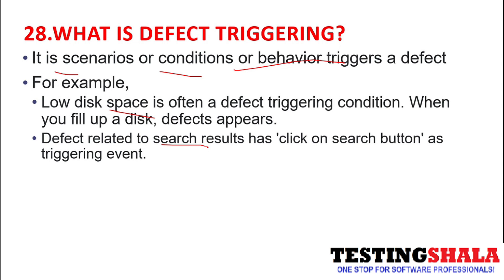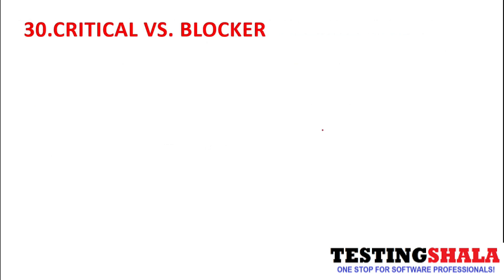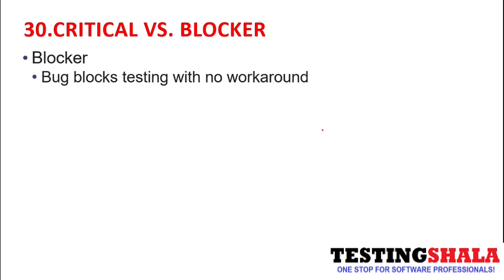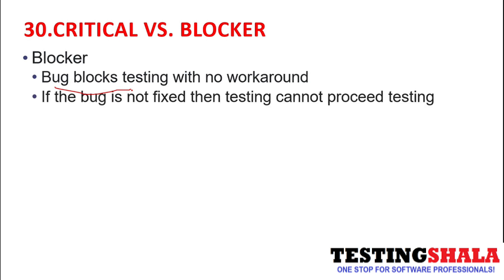What is the difference between critical and blocker defects? Blocker defects are bugs or defects which completely block the entire testing with no workaround. If everything is completely stuck, we call that kind of bug a blocker defect. If the bug is not fixed within a particular timeframe, testing will be completely halted and we cannot proceed further.